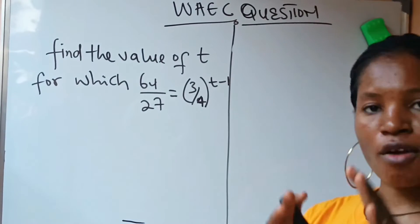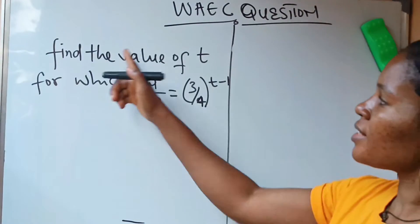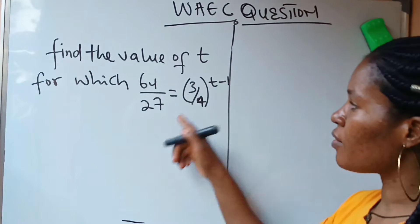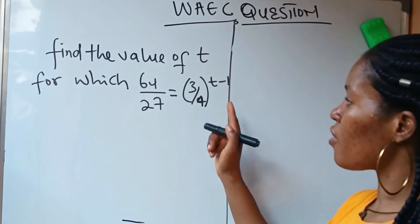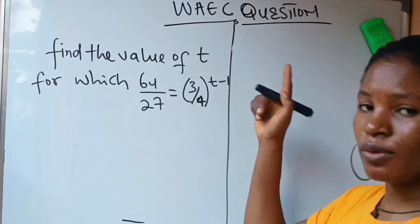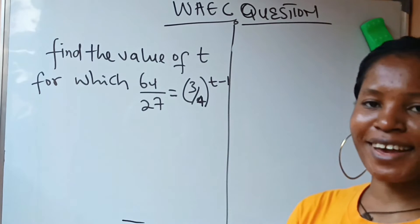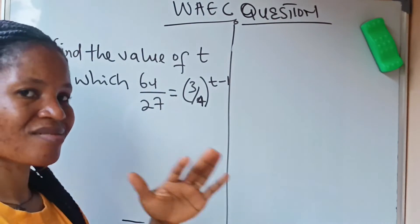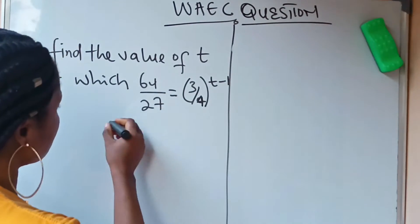Welcome to my channel, good day everybody. We are asked to find the value of t for which 64 over 27 is equal to 3 over 4 raised to the power of t minus 1. Let's go ahead and get the solution. Now looking at this question, it looks somewhat tricky but it's very easy, let's do that.